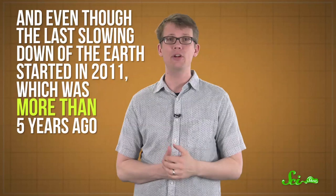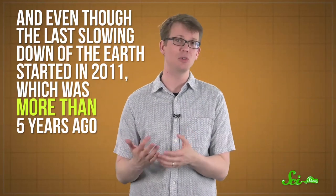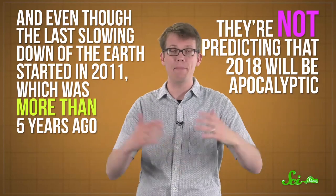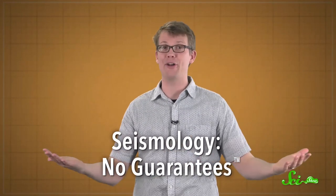Seismology is a super tricky science, and it's filled with uncertainty. The scientists point out that there's still a lot of discussion within the community about what might cause a correlation between the Earth's rotation and big earthquakes. And even though the last slowing down of the Earth started in 2011, which was more than five years ago, they're not predicting that 2018's going to be apocalyptic. Based on the data from the last 100 years, a bad year for earthquakes might be a little more likely to happen, but that doesn't mean it's definitely going to. Which should probably be seismology's motto.